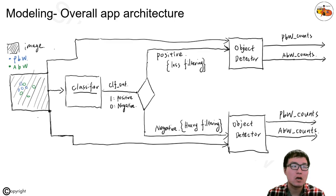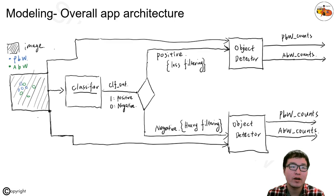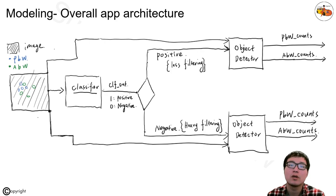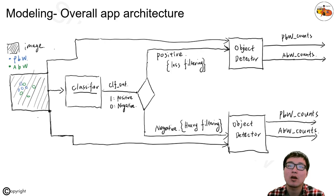The overall app architecture we built passes an image into a classifier that determines whether it is a positive or negative image. If it is a positive image, we apply less filtering on the object detector — in terms of score threshold and non-max suppression threshold. If it's a negative image, we apply heavy filtering when using the object detector for inference. The object detector then tells us how many counts of PBW and ABW are in the image.